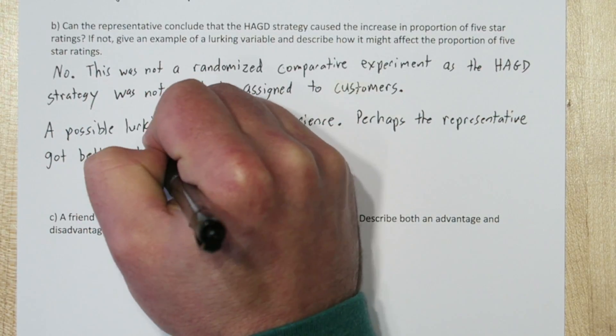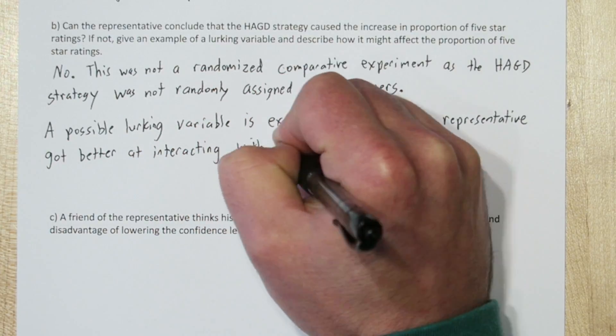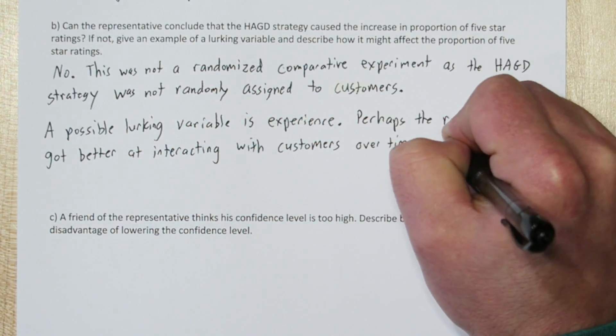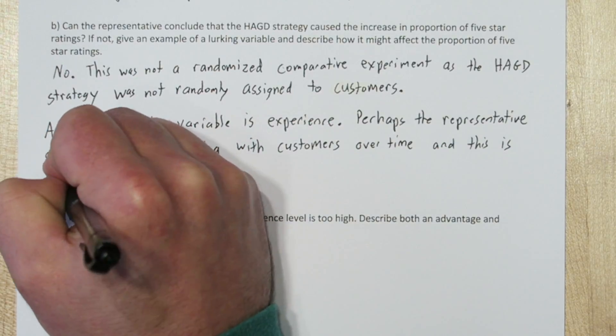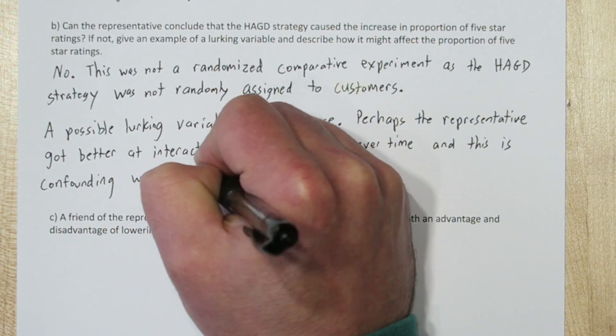But with the way he did it, a possible lurking variable is experience. Perhaps the representative got better at interacting with customers over time. And this is confounding with the have a great day strategy.